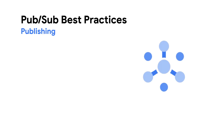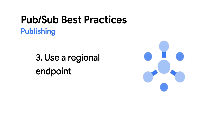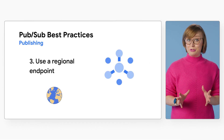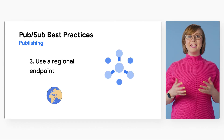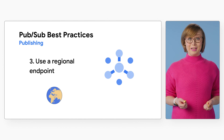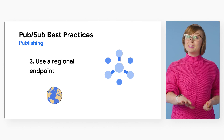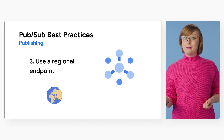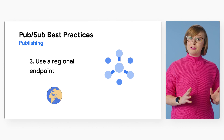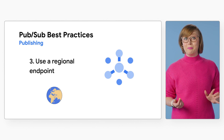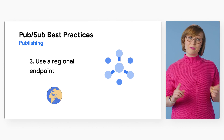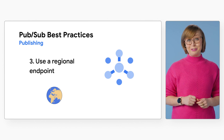Publish the next message only when the previous one has been successfully received by the PubSub server. Number three: use a regional endpoint. Another must-do when publishing with ordering keys is to use a regional endpoint. Since ordered delivery is only guaranteed within a region, using a regional endpoint instead of a global endpoint to publish messages to the same region can be especially useful.